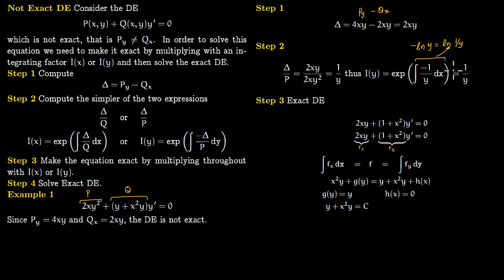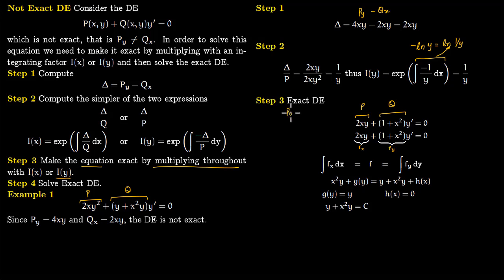With the integrating factor I of y equal to 1 over y, we make the equation exact by multiplying throughout by 1 over y. Multiplying gives the new P as 2xy and the new Q as 1 plus x squared. We verify exactness by checking that the partial of the new P with respect to y equals 2x, which matches the partial of the new Q with respect to x. The equation is now exact.